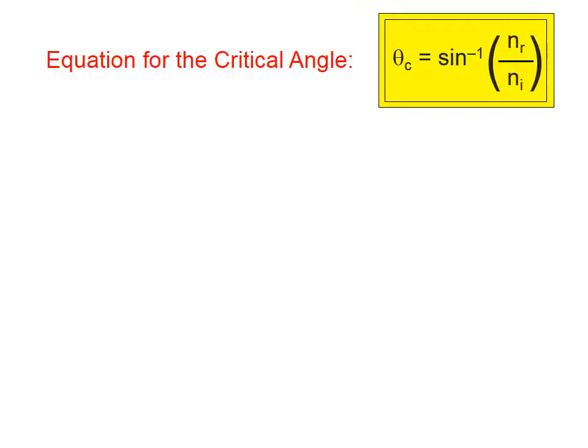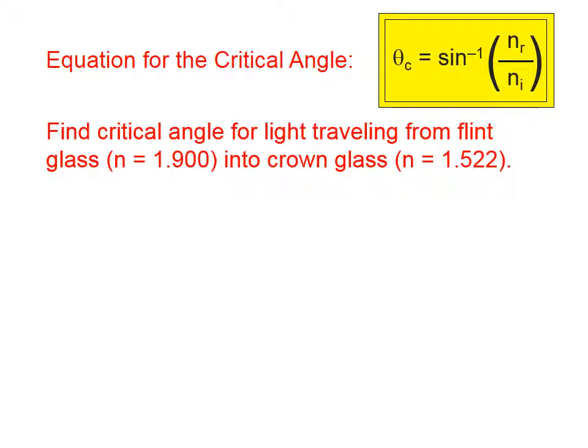The equation for the critical angle is theta sub c equals the inverse sine of n sub r over n sub i. Here, n sub r is the index of refraction of the refracting medium, and n sub i is the index of refraction of the incident medium. Remember that in order to have a critical angle, the refracting medium must be the less dense, faster medium, and the incident medium must be the more dense medium. So n sub i will always be larger than n sub r — the equation breaks down if that fraction exceeds 1.